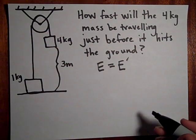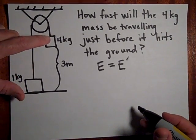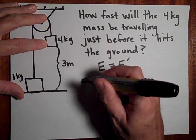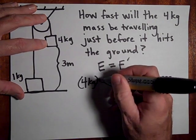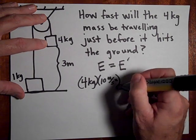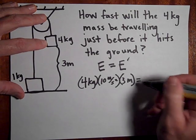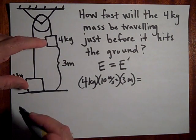I got to change my lighting, the shadow of my hand is in the wrong spot. So E equals E prime. Now it's important that you get all these energies. So let's see, the energy at the beginning is just the gravitational potential energy stored here, so it's 4 kilograms MGH. So 4 kilograms times 10 meters per second squared times H, 3 meters.